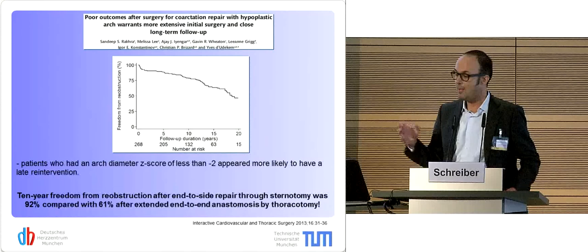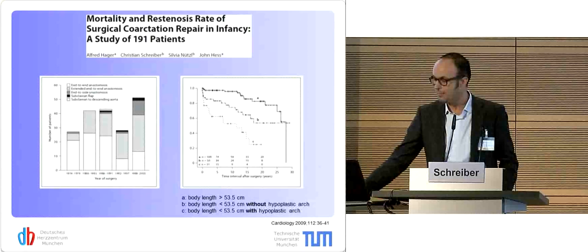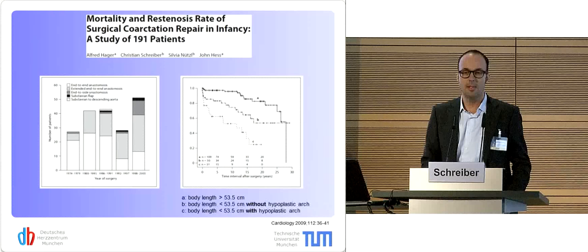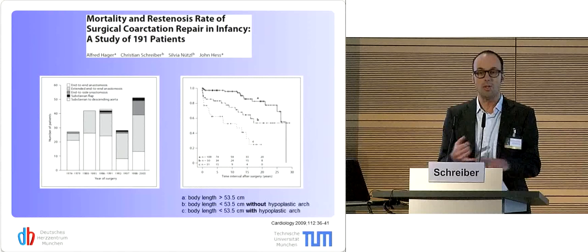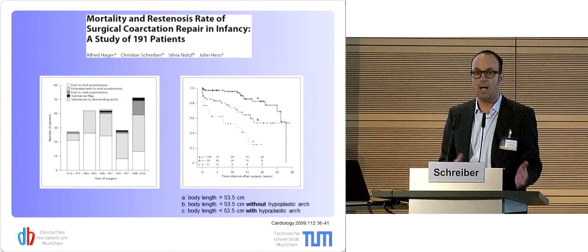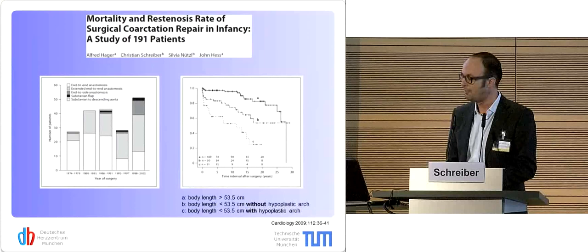These are more or less the same patients Victor presented — the Munich group's coarctation data. On the right-hand side, you see that the smaller the child and the more hypoplastic the arch, the more likely the child is to come back needing re-intervention or re-operation over time.